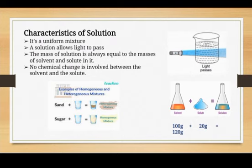The fourth characteristic is that no chemical change is involved between the solvent and the solute. When you add salt in water to make a salt solution, or when you add sugar in a solvent to make a sugar solution, there is no chemical change — you don't see fumes going out or color changes. The solution will be clear.